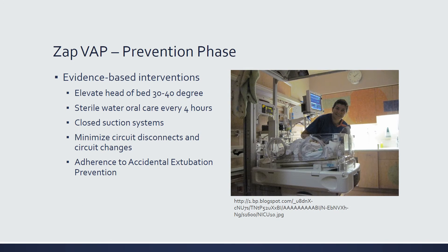Prevention in the ZAPVAP program is based on evidence-based practices. You elevate the head of the bed and perform oral care with sterile water every four hours. In-line suction catheters are used for all patients, changed only when visibly soiled. Staff are instructed to minimize circuit disconnects and circuit changes, and baseline accidental extubation prevention measures are included.